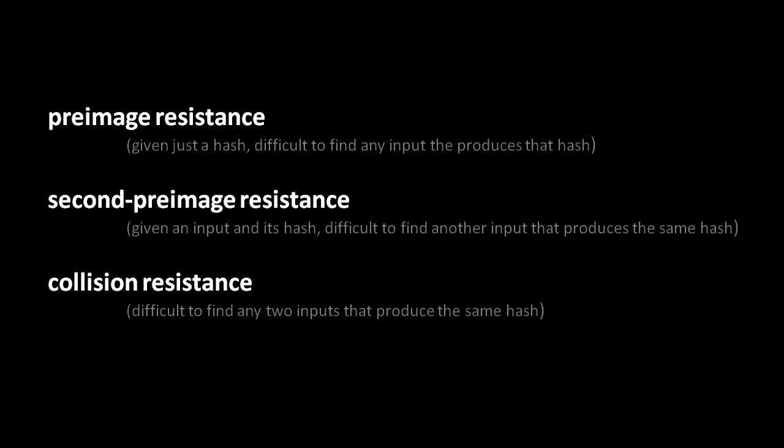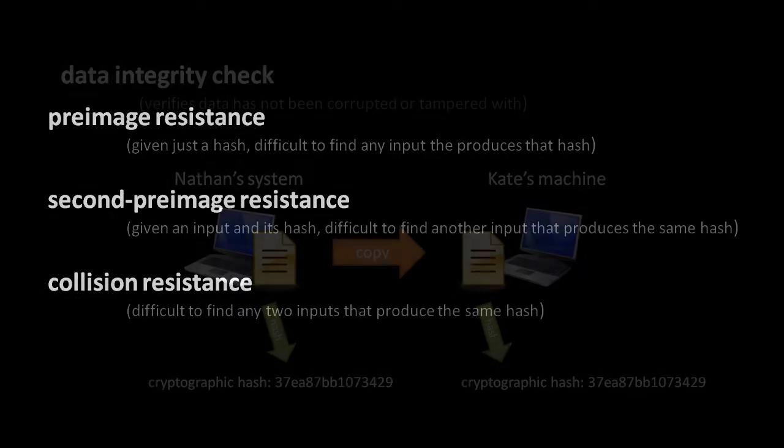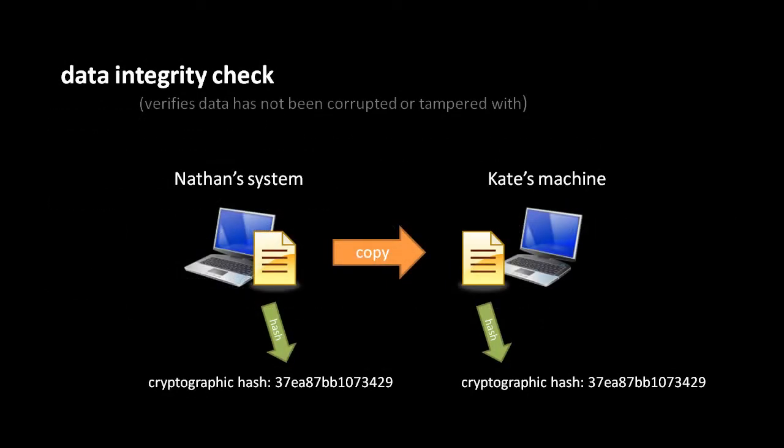And lastly, collision resistance refers to something subtly different, in that we don't have any particular input we want to find a hash for — we just want to find any two inputs that produce the same hash — and that, as well, is something that should be infeasible to do with a cryptographic hash function. So now the question is: what is a hash function with these properties good for?